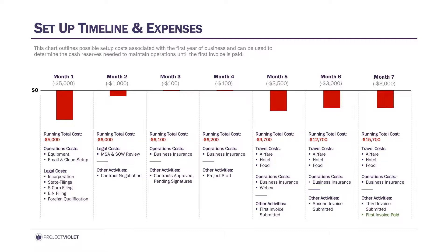Going to month two is when I started talking to the client and starting contract negotiations. Before I did that, I actually drafted my own MSA and SOWs and went to a lawyer to review those — cross the T's, dot the I's — and helped me throughout the contract negotiations and review all the red lines. That happened in month two and really bled into month three, where there wasn't really any cost except for the business insurance.